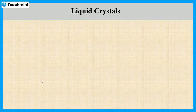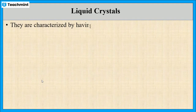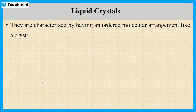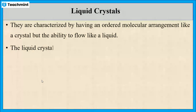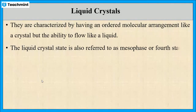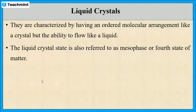Hence the liquid crystals are characterized by having solid-like molecular arrangement and liquid-like flowing ability. The liquid crystal state is also known as the fourth state of matter, in addition to the solid, liquid, and gaseous phases.